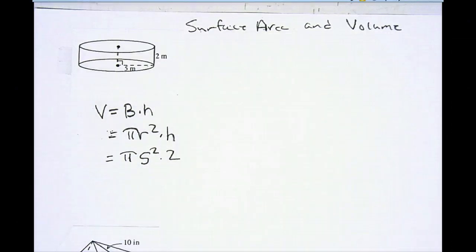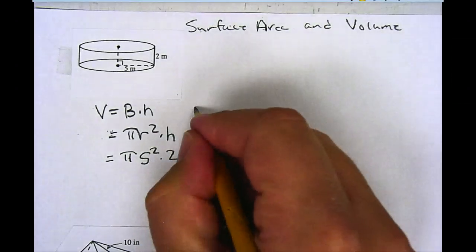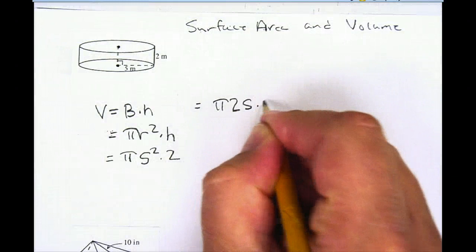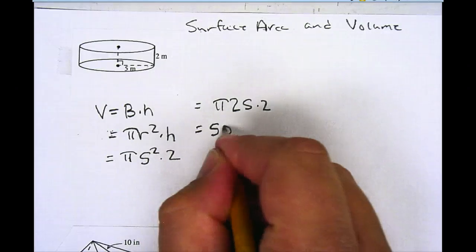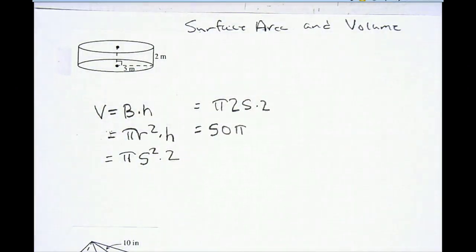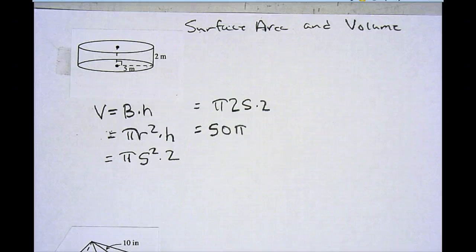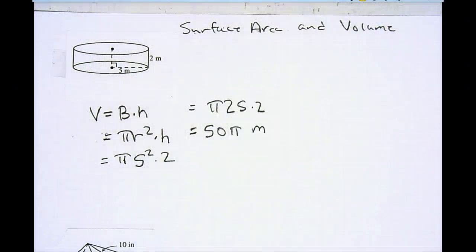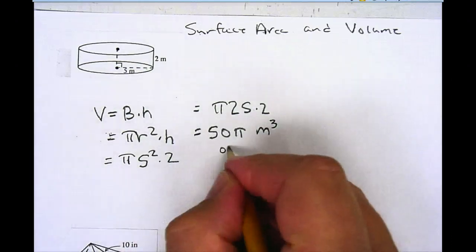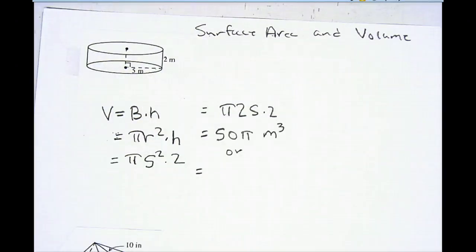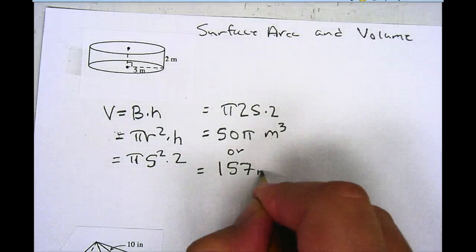It's just like an order of operations problem now. I do the exponents first, and what that's going to become is pi times 25 times 2. I can multiply 2 times 25 in any order — that's going to be the same thing as 50 pi. I could leave the answer like this because this is an exact answer, or I can multiply 50 times 3.14 to get an approximation. So it's going to be 50 pi meters cubed, or I can write that as 50 times 3.14, which gives me 157 meters cubed.